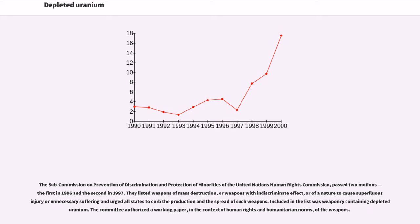The Subcommission on Prevention of Discrimination and Protection of Minorities of the United Nations Human Rights Commission passed two motions — the first in 1996 and the second in 1997. They listed weapons of mass destruction, or weapons with indiscriminate effect, or of a nature to cause superfluous injury or unnecessary suffering, and urged all states to curb the production and spread of such weapons. Included in the list was weaponry containing depleted uranium. The committee authorized a working paper on the weapons in the context of human rights and humanitarian norms.